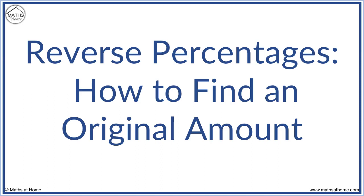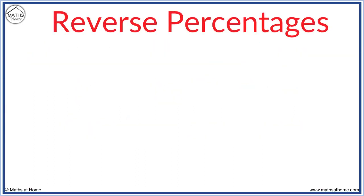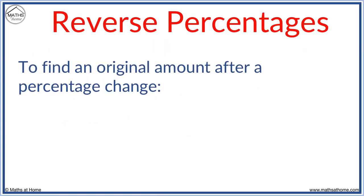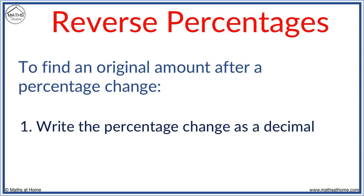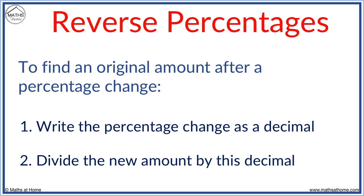In this lesson we learn how to find an original amount after a percentage change. To find an original amount after a percentage change, write the percentage change as a decimal. Then divide the new amount by this decimal.